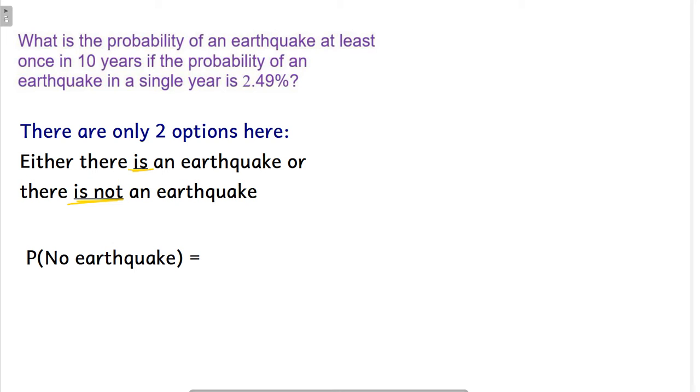So since they gave us the probability that there is one in any given year of 2.49 percent, then the probability that there is not an earthquake has to be one minus the probability that there is one. So one minus 0.0249. So the probability that there is no earthquake in any given year then is 0.9751.